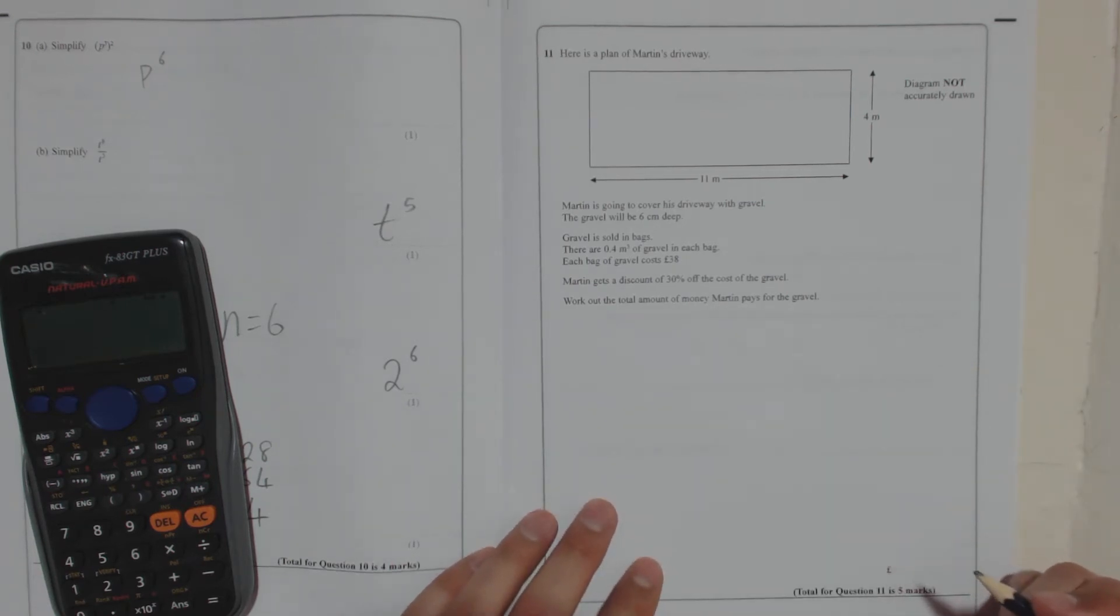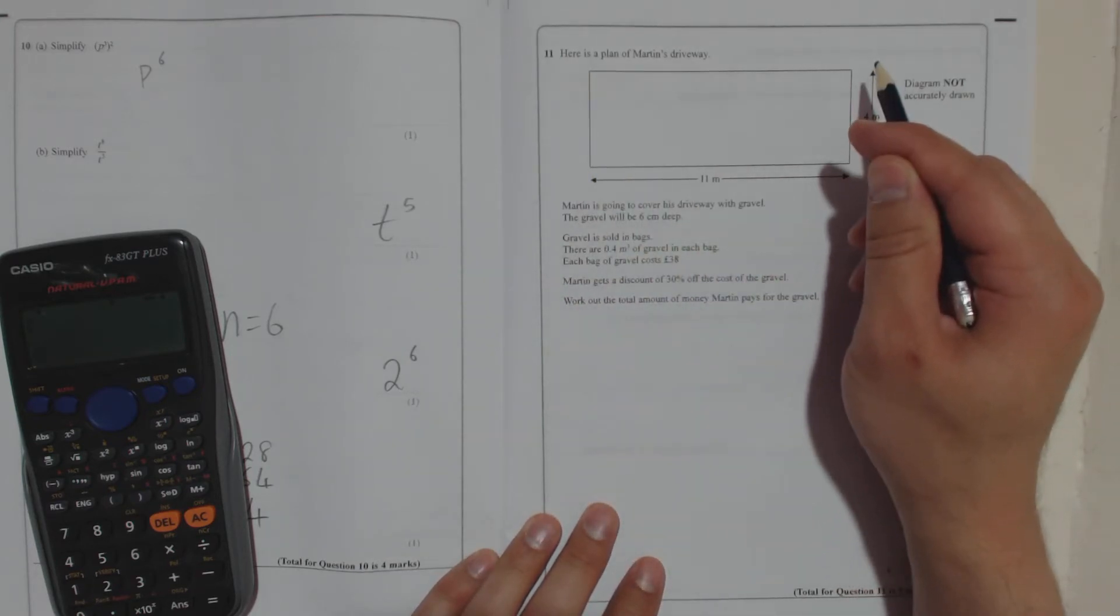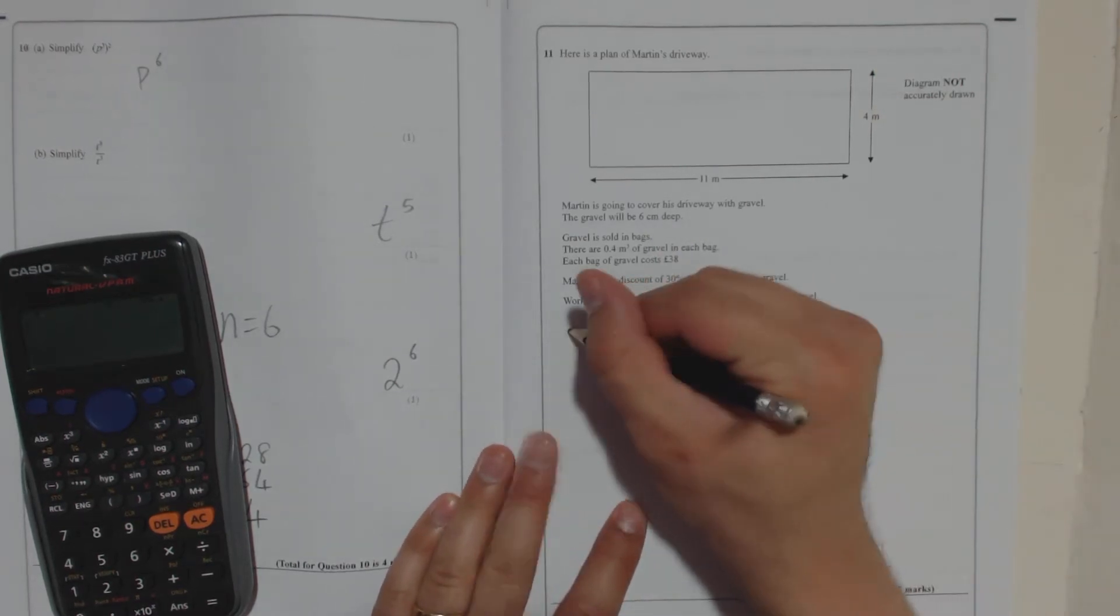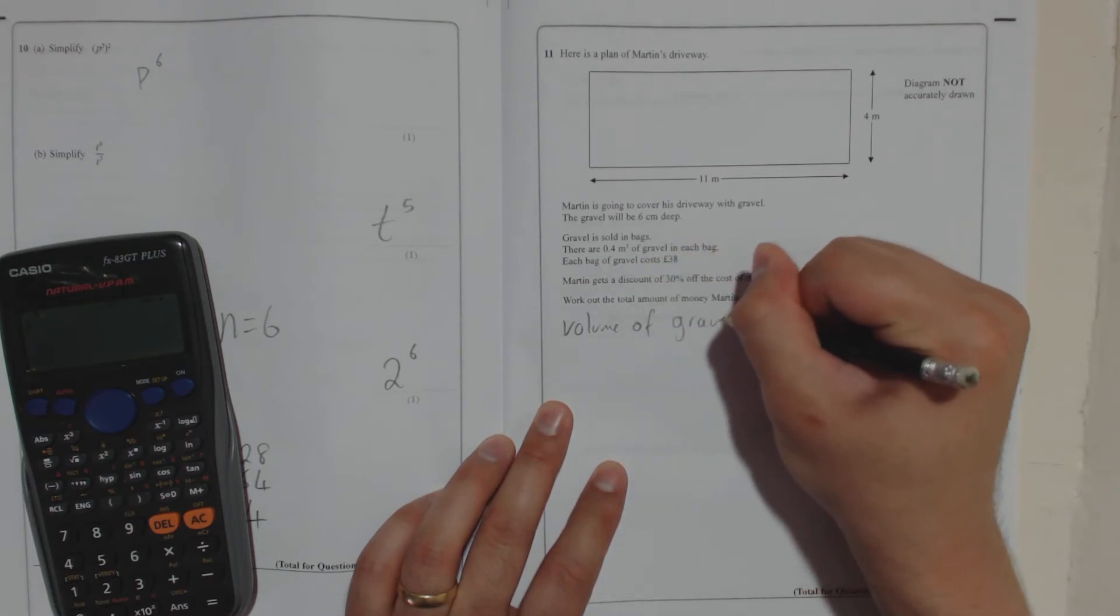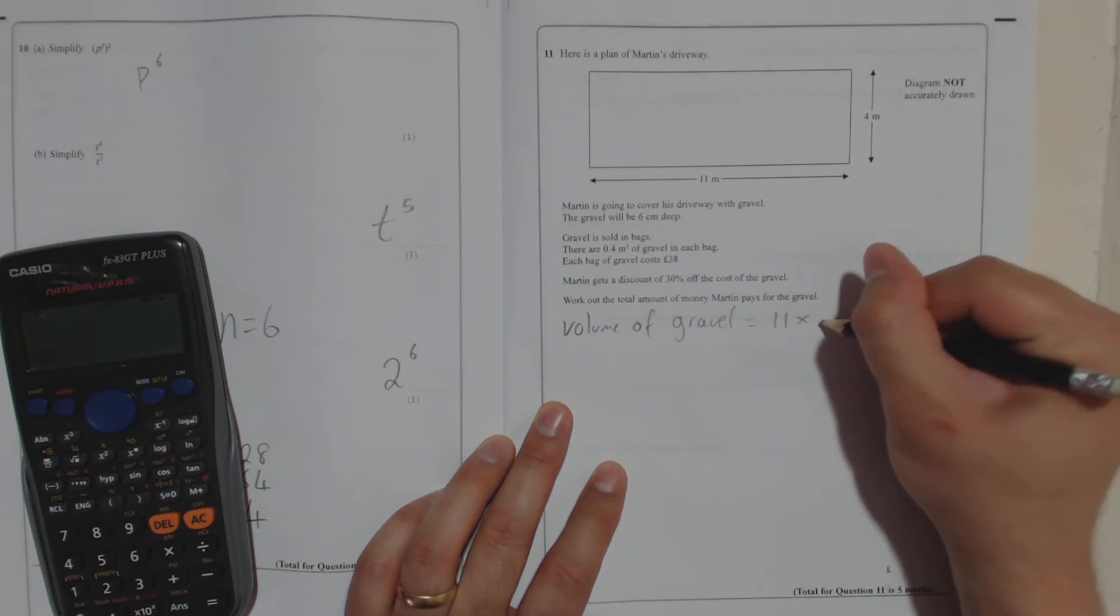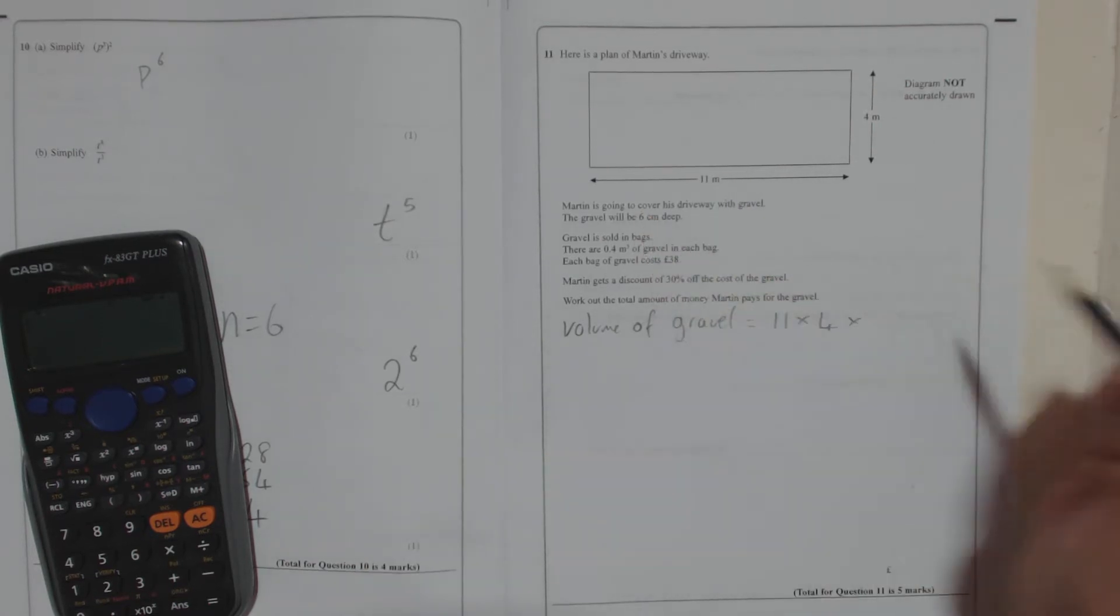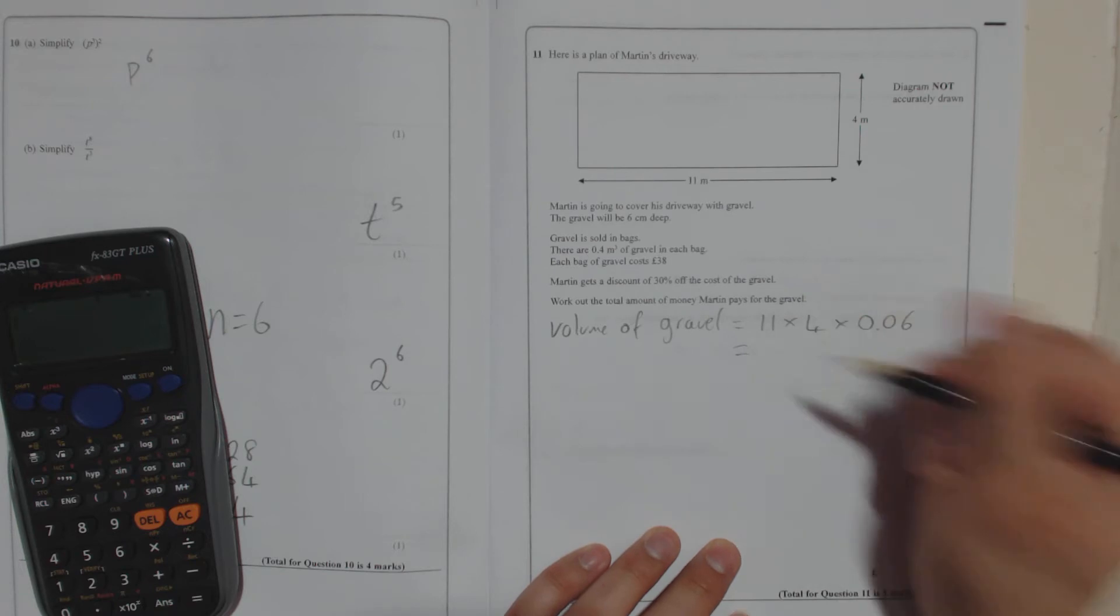So first of all we need to work out how much gravel. So we know it is going to cover an area 11 by 4 and it is 6 centimetres deep. So the volume of gravel is equal to 11 times by 4 times by, now remember they are in metres, that's centimetres. So 6 centimetres is 0.06. So work that out.